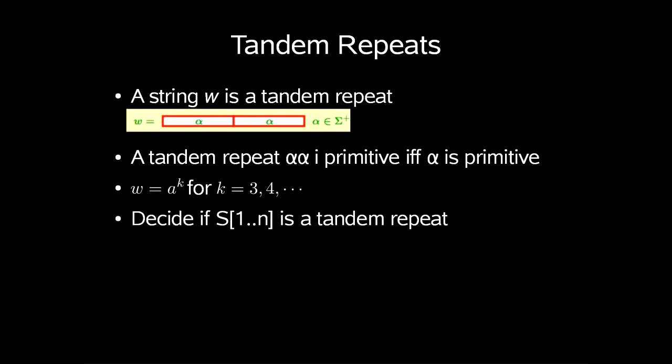A string w equal to a to the power of k, for k equal to 3, 4 and so on, is called a tandem array, but not in every general case.